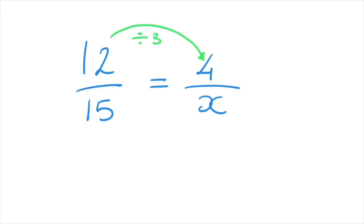And so to find what x has to be, we carry out the exact same operation on 15. That's 15 divided by 3 will give us what x has to be. And since 15 divided by 3 is equal to 5, we can go ahead and replace x by 5. And there we have it. We've just written 12 over 15 as an equivalent fraction whose numerator is equal to 4.